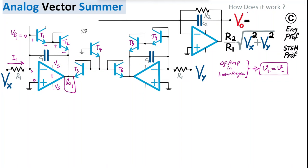The same process occurs for op-amp 2: Vout2 is defined by current I2, which flows through the base-emitter junctions of T4 and T5. I2 is defined by input voltage Vy.